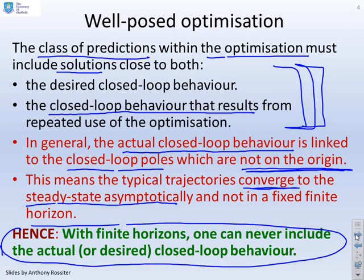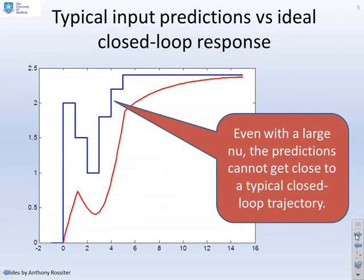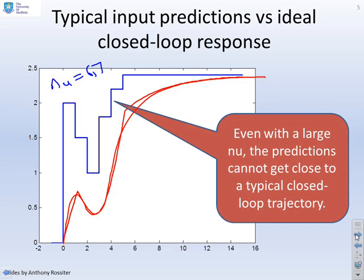That's why we can have problems with GPC and DMC. This figure illustrates the key issue: if the red curve is an ideal closed-loop input trajectory, even with a relatively large NU — something like 6 or 7 — the blue curve is still not close to the red curve, because it reaches a fixed value in finite time and stays there. This is one of the fundamental problems with GPC: you cannot easily get close to the predictions you actually want.